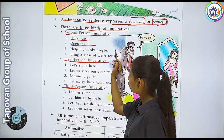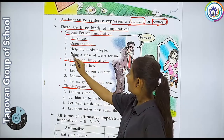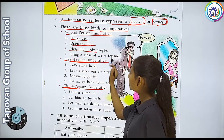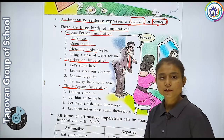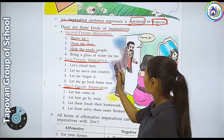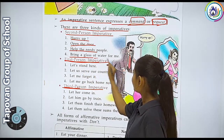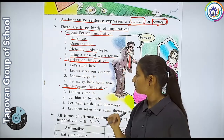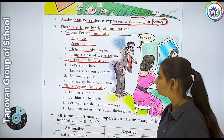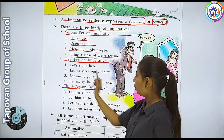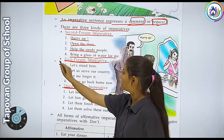Second person imperative examples: 'Open the door' - darwaza kholo; 'Help the needy person' - zarooratmandon ki madad karni chahiye; 'Bring a glass of water for me' - mere liye paani ka glass lao. Aur first person mein kya aayega?